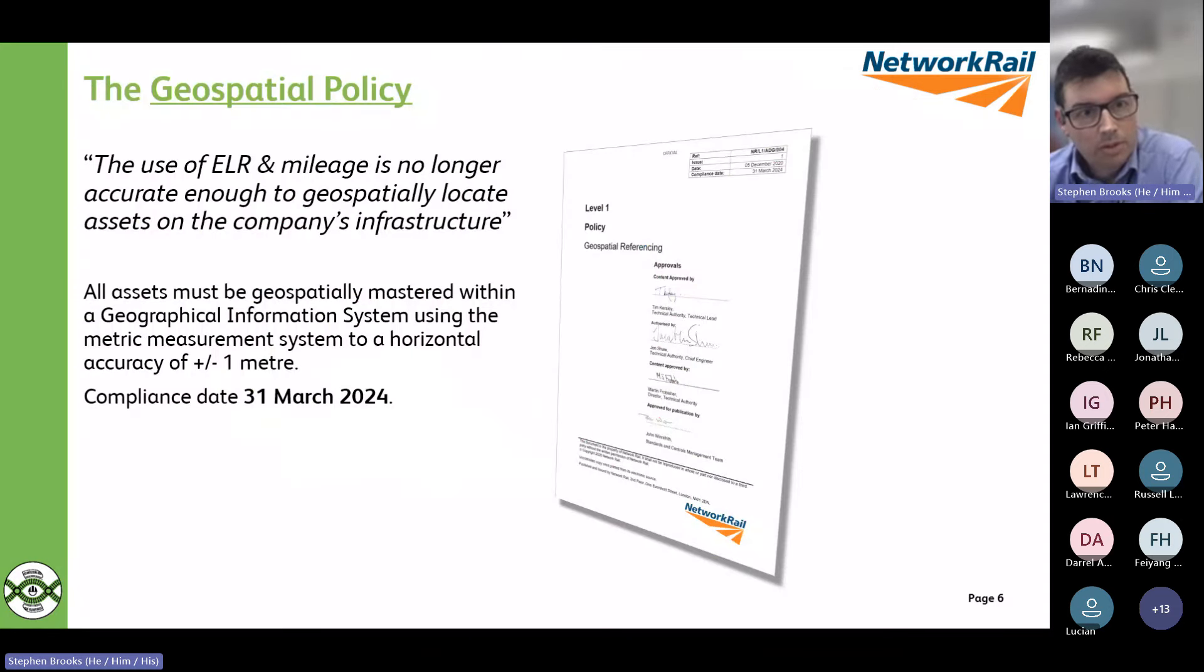Thankfully, we have a geospatial policy in place. That particular policy was created or issued in December 2020. Unfortunately, probably not the best time to land a standard just during a pandemic. It has a compliant state of March 2024. In that standard, it states that the use of ELR and mileage is no longer accurate enough to geospatially locate assets on the company's infrastructure. We must master everything to plus or minus one metre in the horizontal - Eastings and Northings, not vertical. So two metres vertically, one metre horizontally of their true location. That's not just assets that fall within the track, but all of our assets, lineside assets as well. All of our earthworks, drainage, vegetation, boundaries, etc., need to be accurately mapped to within one metre.